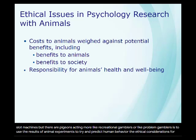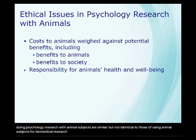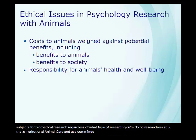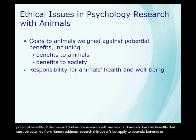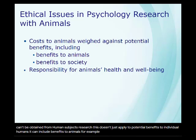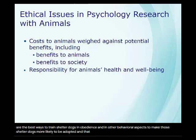The ethical considerations for doing psychology research with animal subjects are similar, but not identical, to those of using animal subjects for biomedical research. Researchers and IACUCs — institutional animal care and use committees — must weigh the costs to the animals against the potential benefits of the research. Behavioral research with animals can have benefits that can't be obtained from human subjects research, and this can include benefits to animals. For example, research on canine behavior has been used to help determine the best ways to train shelter dogs in obedience and other behavioral aspects to make them more likely to be adopted — benefiting both dogs and humans.